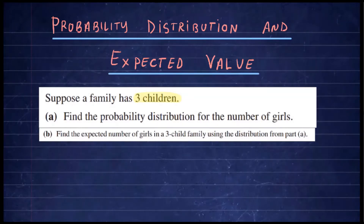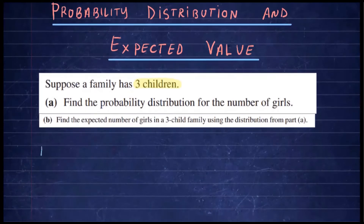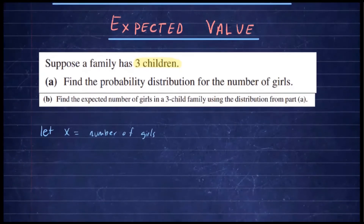When you create a probability distribution table, we're trying to list the values the random variable can take and the corresponding probabilities. So let's start with part a. We choose x to stand for the number of girls in this family. It is binomial, so we identify n, which is three because the family has three children. The probability p of getting a girl is one half, assuming having a girl or a boy is equally likely.